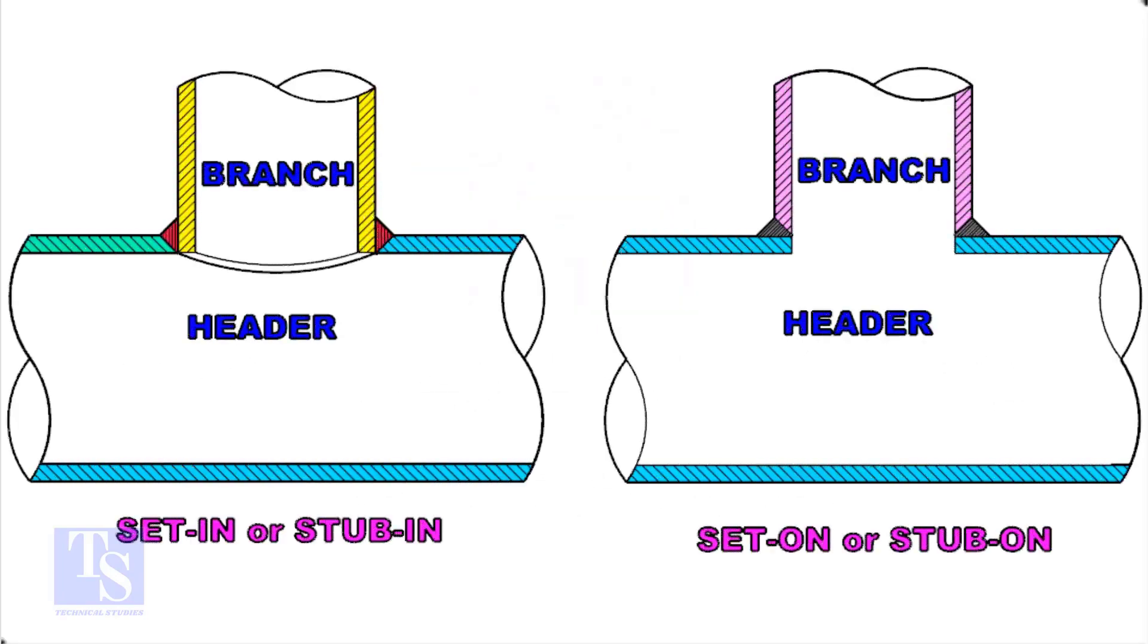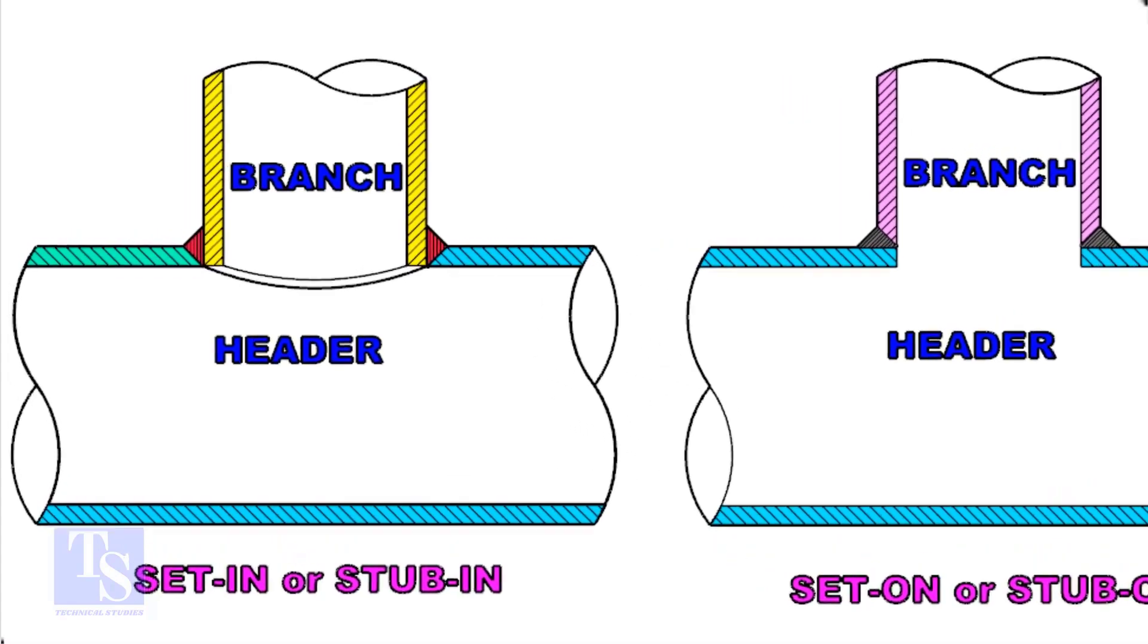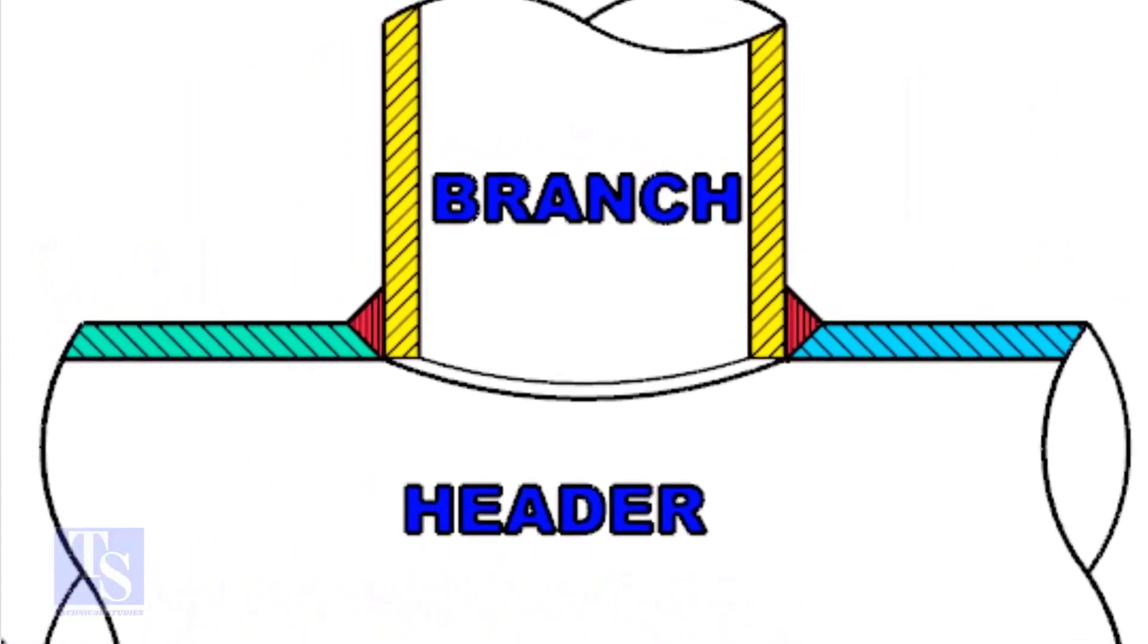Let us check the difference between a stub-in and stub-on connection. Look at the stub-in joint, the bevel is prepared on the header, and the branch pipe is in the header.